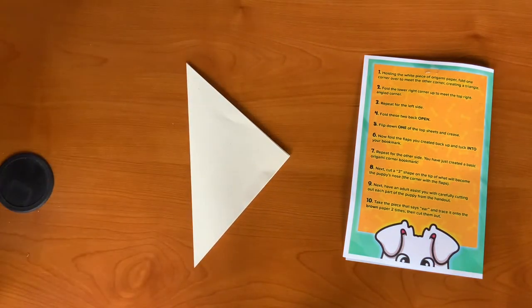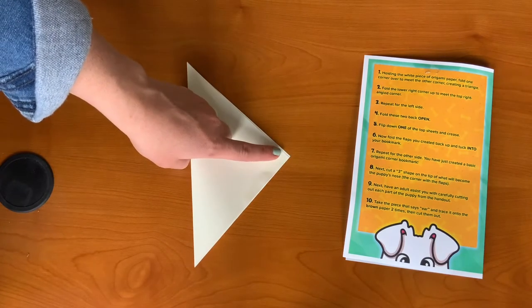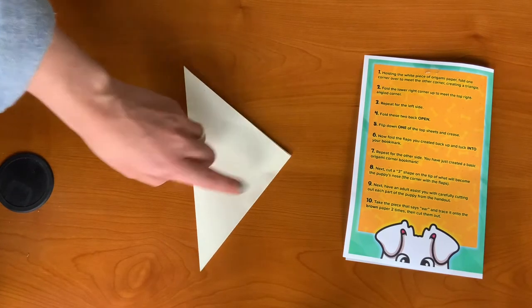Step two, fold the lower right corner up to meet the top right angled corner. Repeat for the left side.